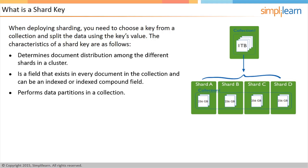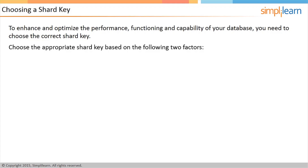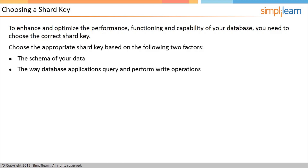MongoDB distributes chunks and their documents among the shards in a cluster, and also distributes documents according to the range of values in the shard key. To enhance and optimize the performance, functioning, and capability of your database, you need to choose the correct shard key. Choosing the appropriate shard key depends on two factors: the schema of your data, and the way applications in your database query and perform write operations.